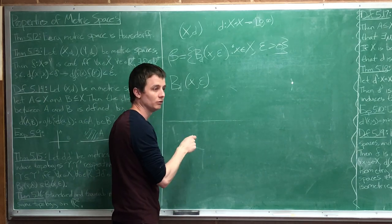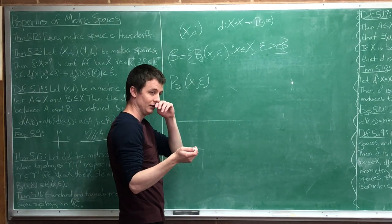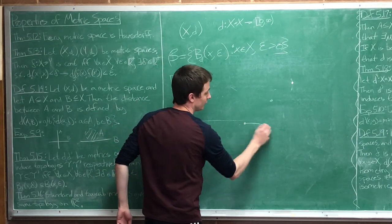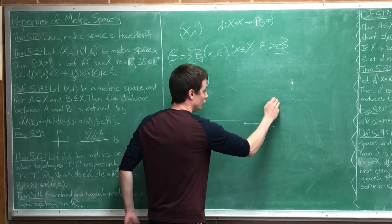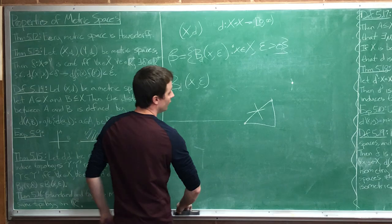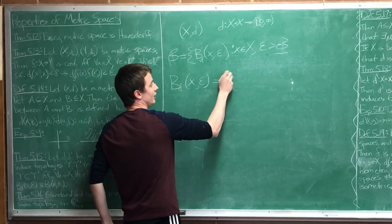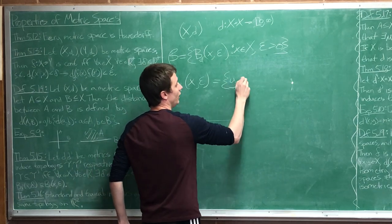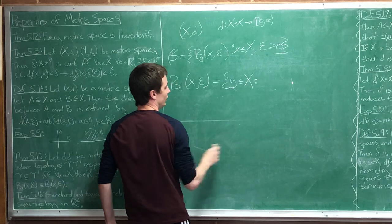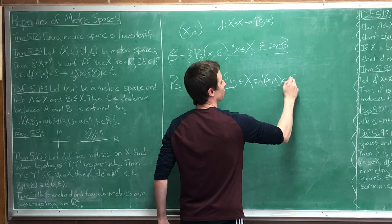So what is the open ball using this metric centered at x with radius epsilon? Why do I say radius? Because we might not be talking about a circle - we could be using, for example, the taxicab metric. This set is the set of all y in X such that the distance from x to y is less than epsilon.